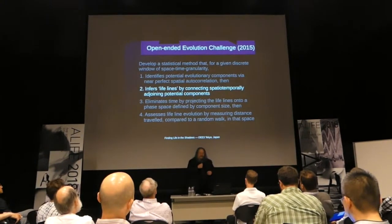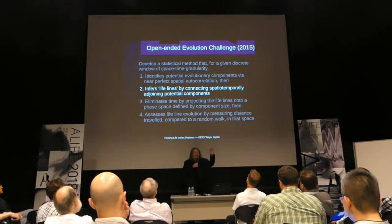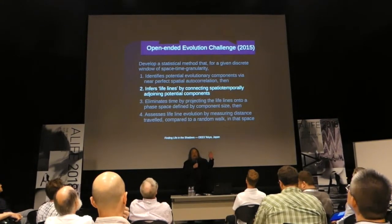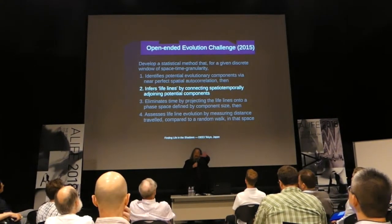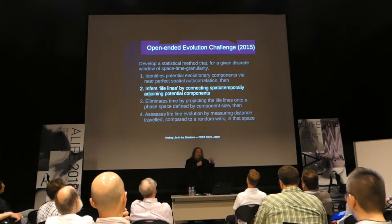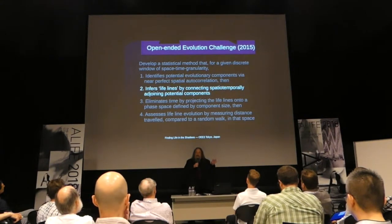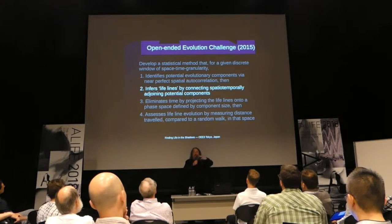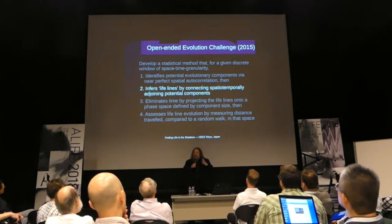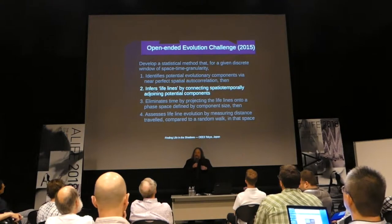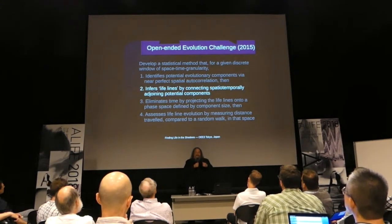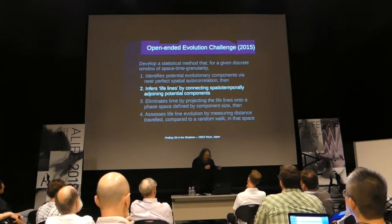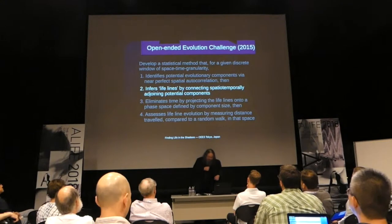Today we're going to focus on step two. We're going to cheat on step one — deciding candidate creatures — and take advantage of special knowledge of the problem to finesse that. We'll focus on: even if you have reason to say 'I think this thing is kind of a creature,' actually figuring out what happens over time turns out to be non-trivial. And that's what we figured out how to do in one specific case.